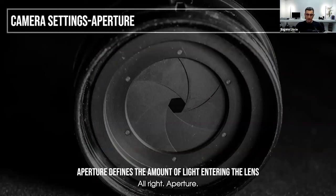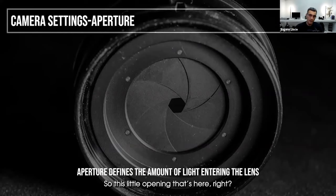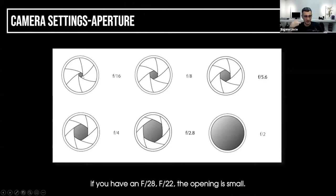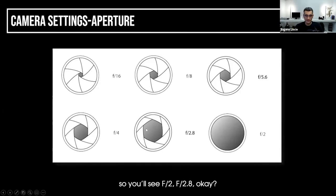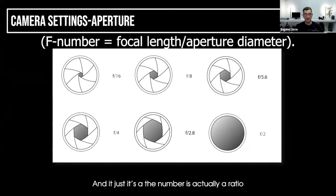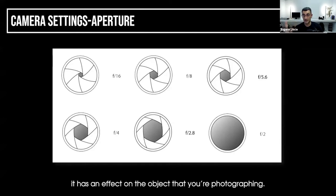Aperture defines how much light is getting inside the lens — this little opening can be made very wide or very small. A high F number like F22 or F28 means the opening is small. A low F number like F2 or F2.8 means a very big opening. So it's actually the other way around: large number, small opening; low number, big opening. The number is actually a ratio to the focal length.